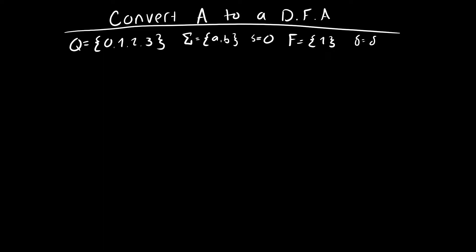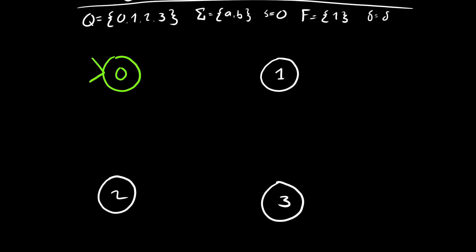Let's get started with our start state. Our start state from the formal definition is zero, and then we have states one, two, and three. So let's add that to our diagram. Now we've added all of our states: zero, one, two, three. We know that one is going to be an accept state, so I'll use a green circle inside that white circle to signify it's an accept state.